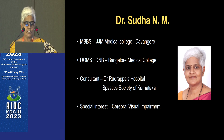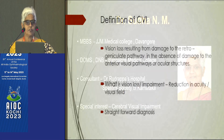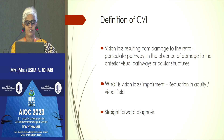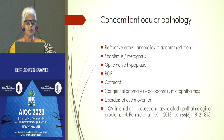We will start this session by trying to understand how CVI is defined in literature and how classification affects our patients. Traditionally, we understand CVI as vision loss from damage to retrogeniculate pathways, and consider that the anterior visual pathways and the eye are essentially normal. This is a very straightforward diagnosis, defining loss of vision as reduction in acuity and visual field.